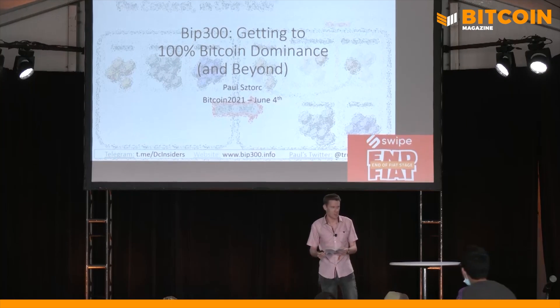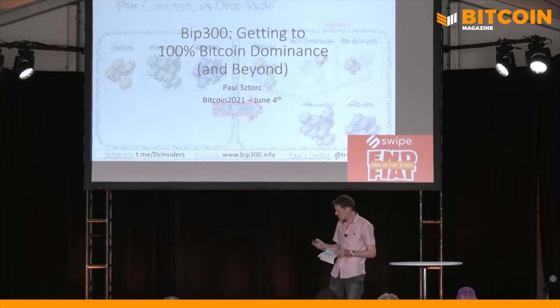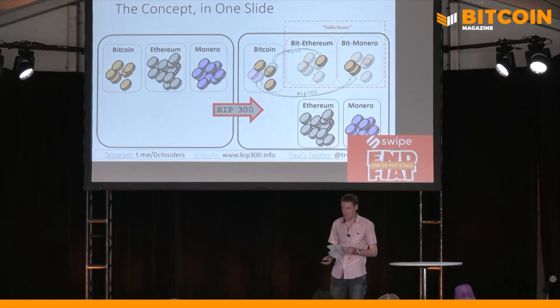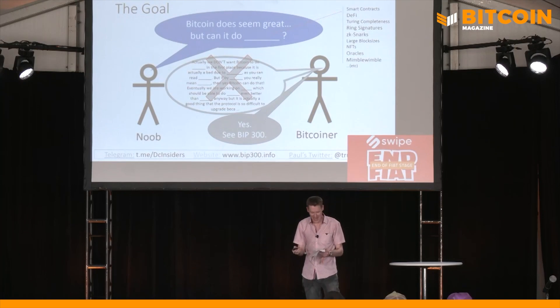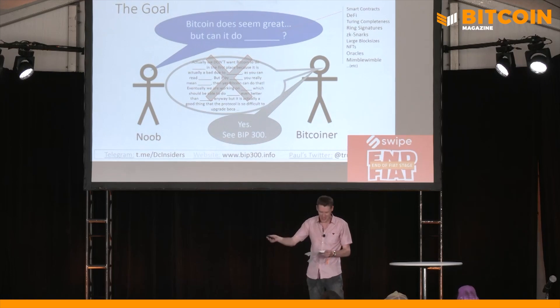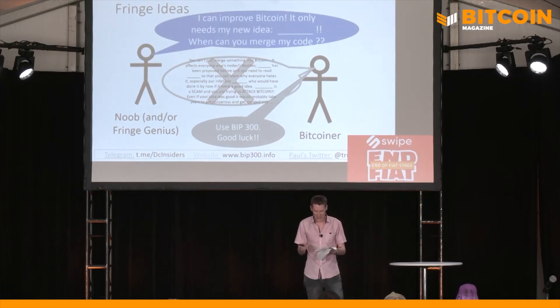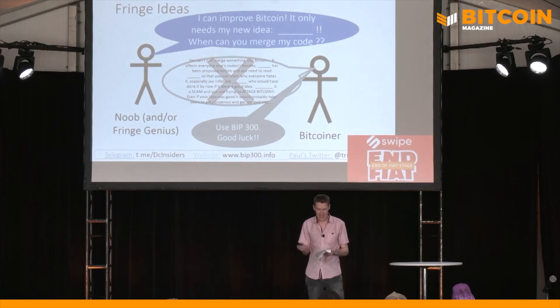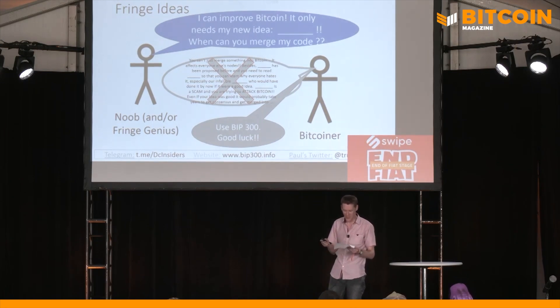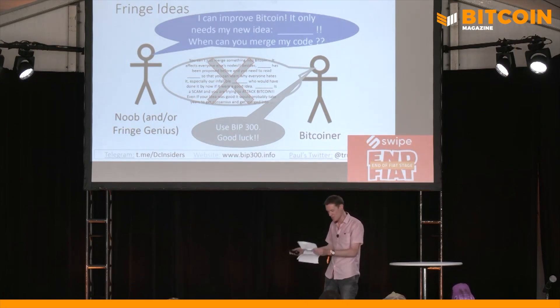Now let's get into some of the exciting potential upgrades to Bitcoin, starting with BIP300, also known as Drive Chains. These could bring the end to all altcoins. The whole idea of Drive Chains is porting other projects as Bitcoin's sidechains. So if someone asks can Bitcoin do X or Y — referring to features of other coins like ZK Snarks from Zcash, larger blocks, shorter block clearance, or whatever — the answer becomes yes, see BIP300. For people who want to quote-unquote fix Bitcoin, they can now do that without any permission on a BIP300 sidechain, and more importantly, without compromising the base layer in any way, while respecting the 21 million coin limit.